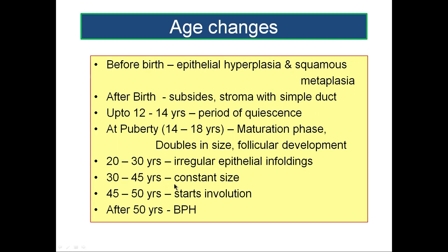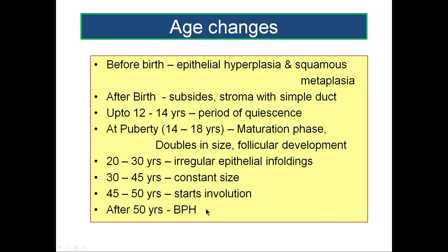From 30 to 45 years it is constant in size. Beyond 45 years, it starts involution whereby the follicles become regular and the irregular epithelial infoldings start regressing. Beyond 50 years of age, benign prostatic hypertrophy — BPH — becomes inevitable, seen in elderly males.